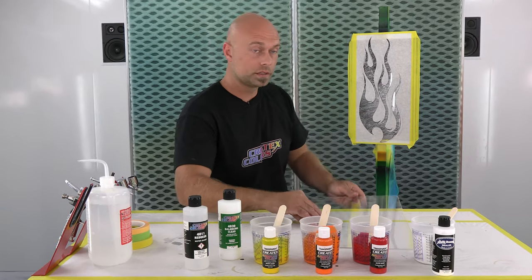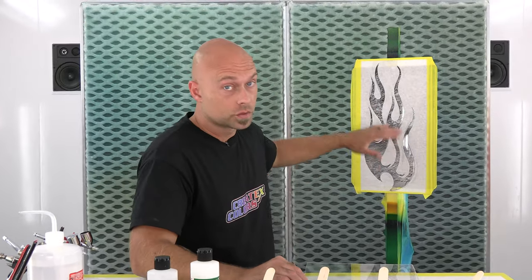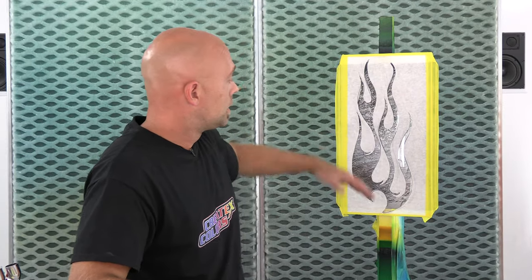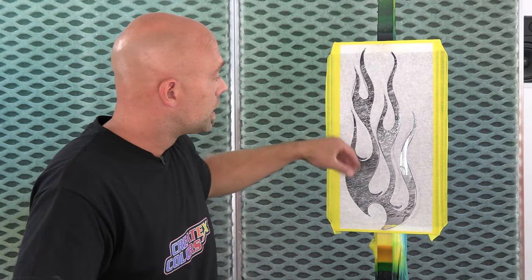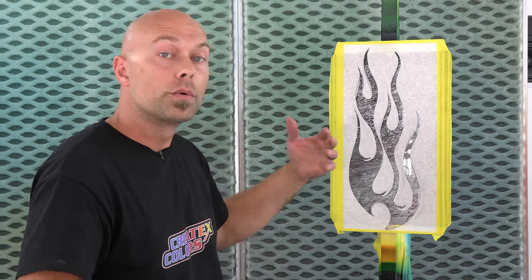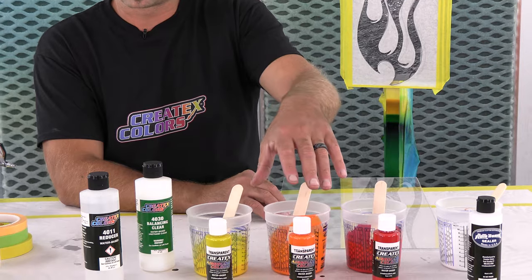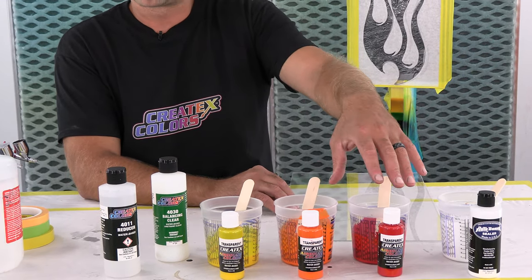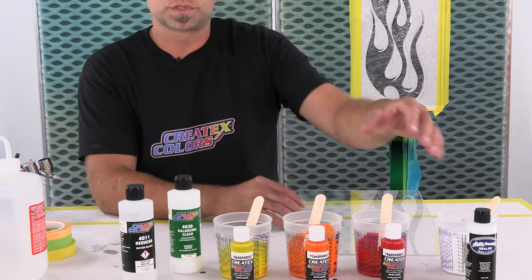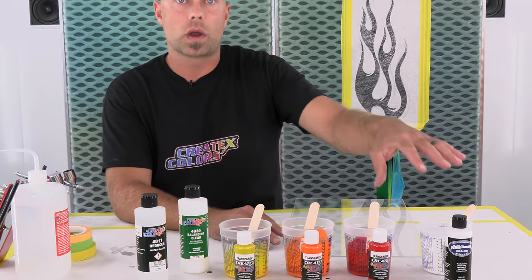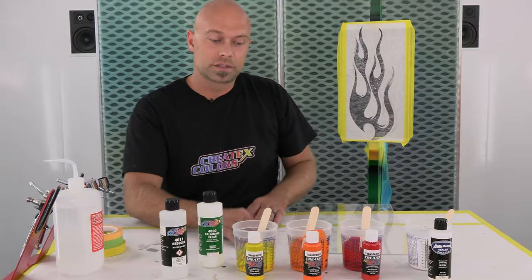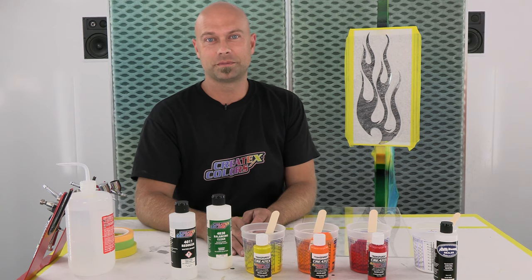I already have a piece here - unscuffed, just wiped down. I've applied frisket film and cut out a loose set of flames. We're going to reverse paint this, starting with transparent yellow, then transparent orange, then transparent red, and lastly we'll back it up with our sealer white to really make it pop.